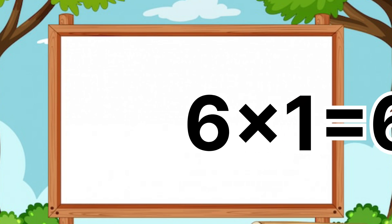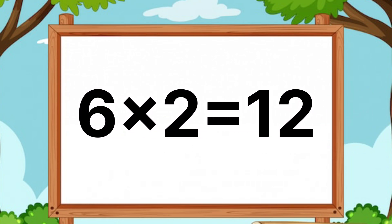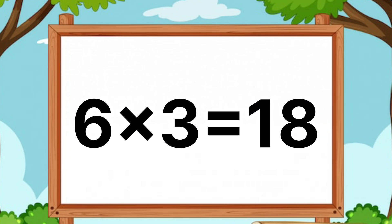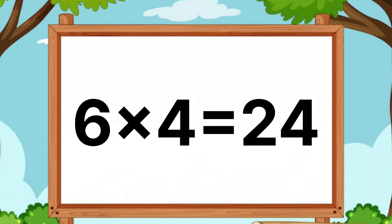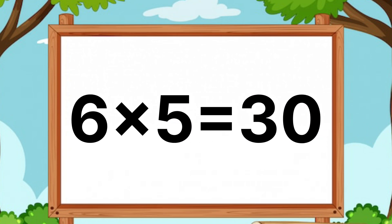Six ones are six. Six twos are twelve. Six threes are eighteen. Six fours are twenty-four. Six fives are thirty.